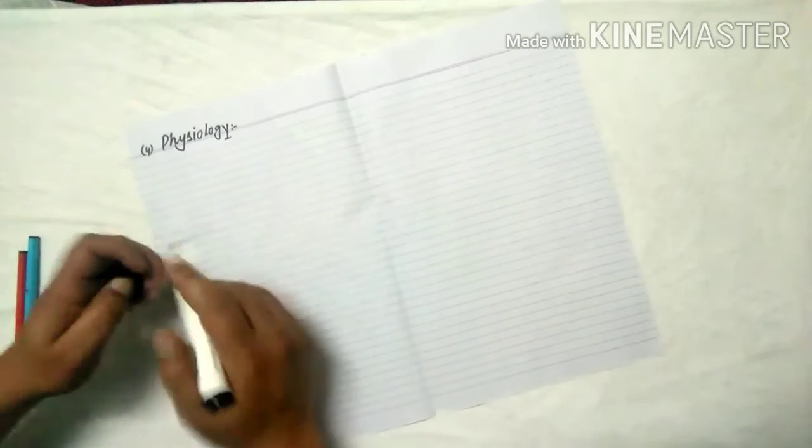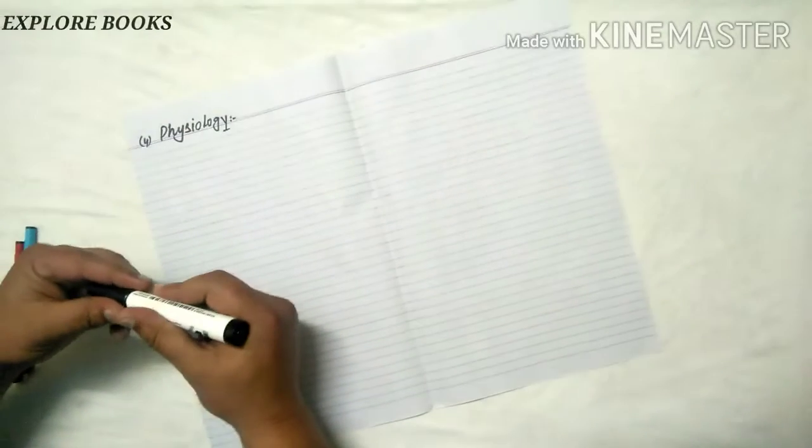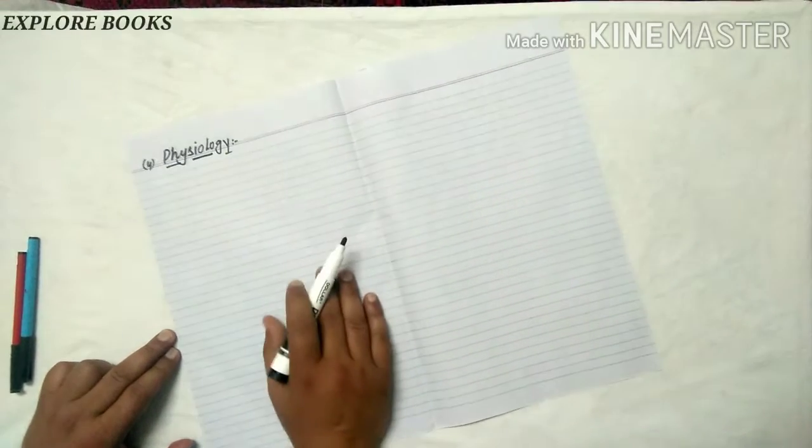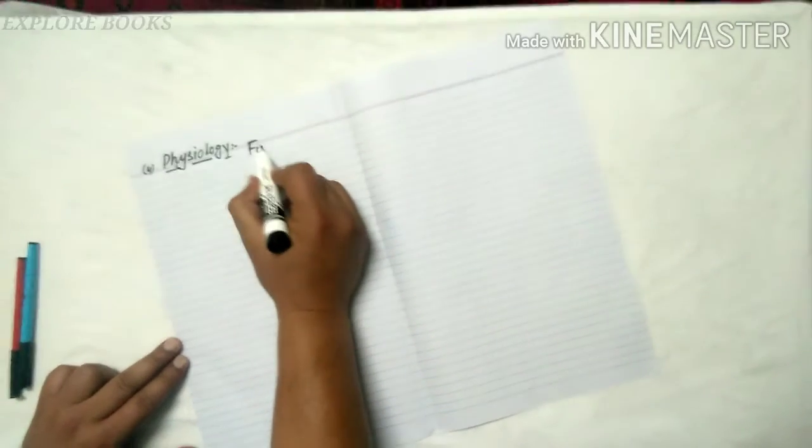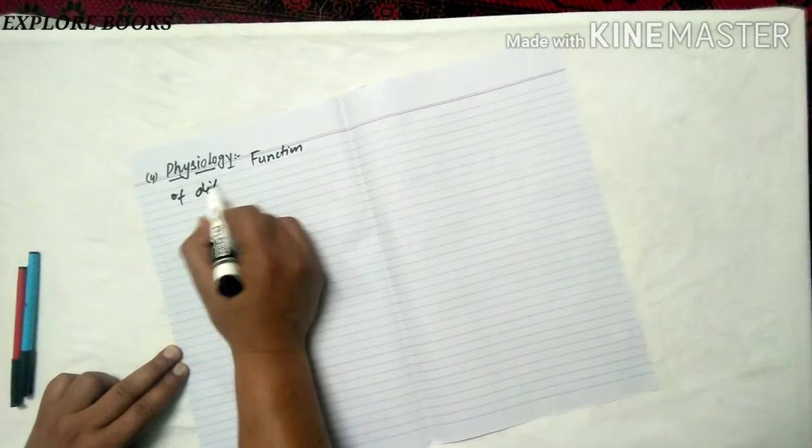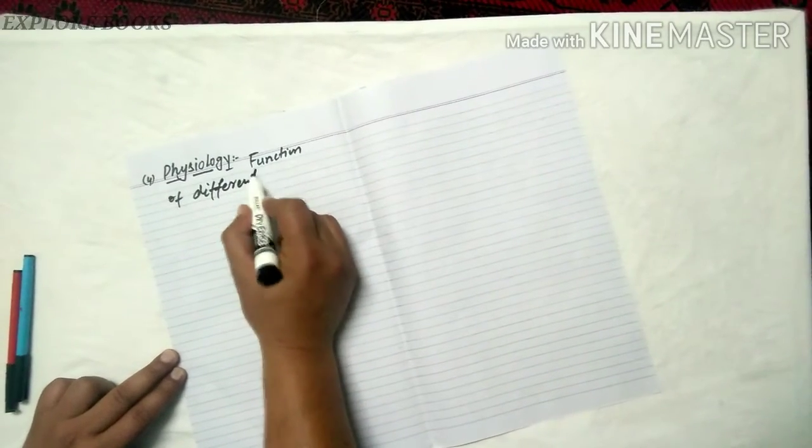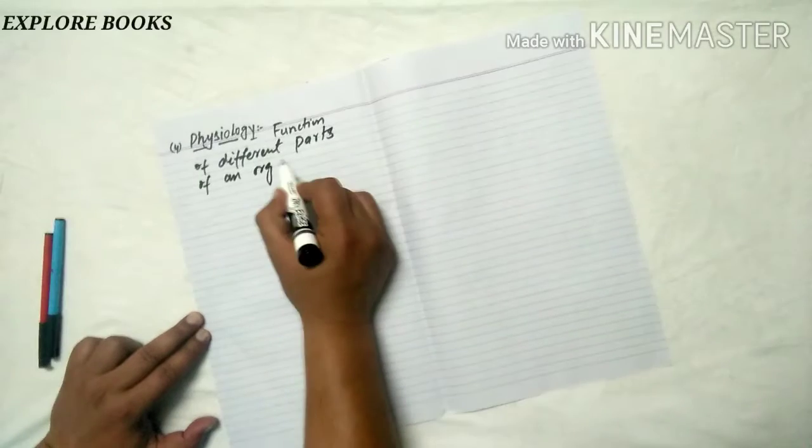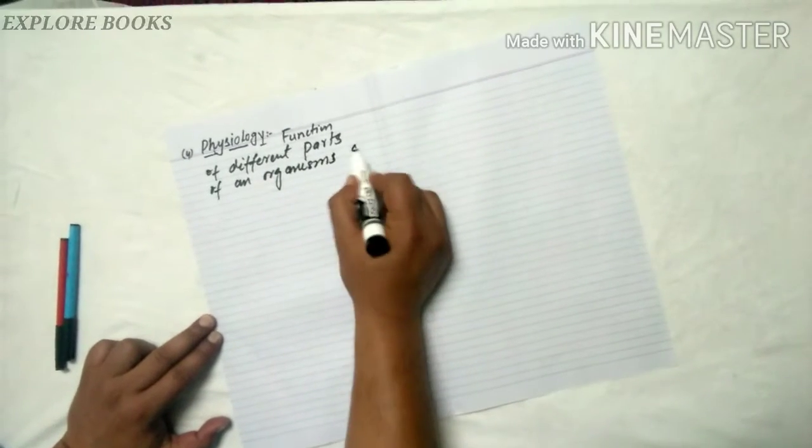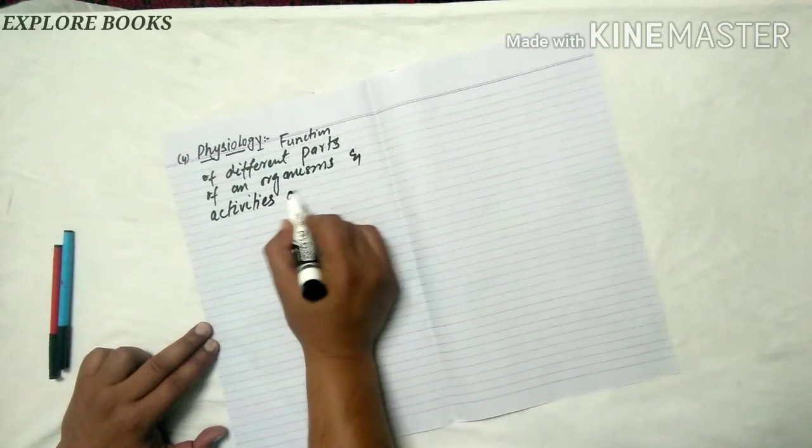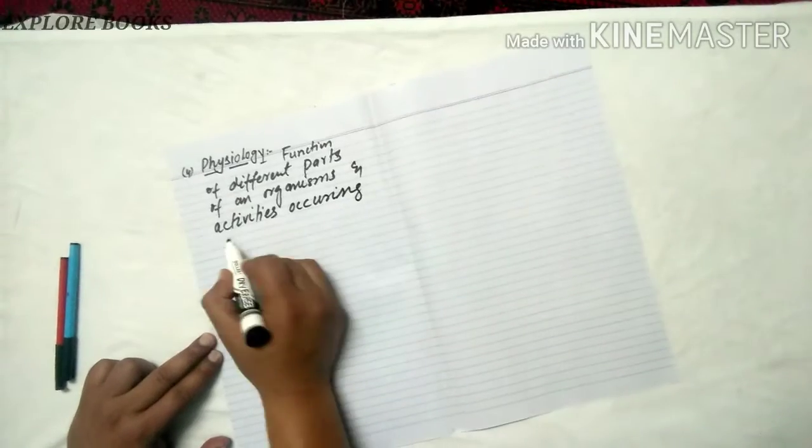I am going to study the remaining branches of biology and the four numbers of physiology. Physiology is the function of different parts of an organism and activities occurring in them.